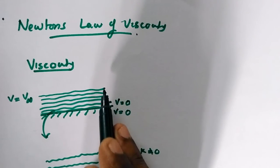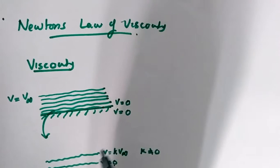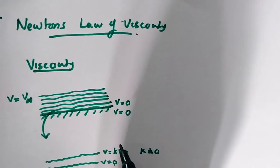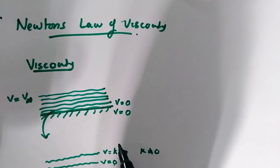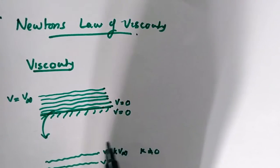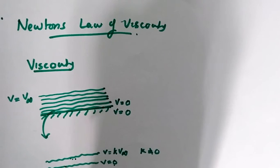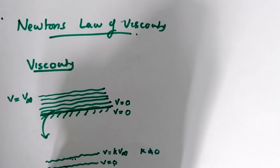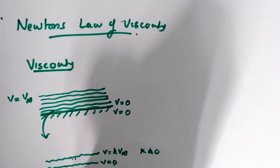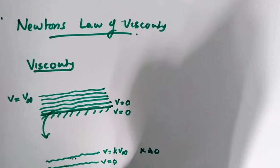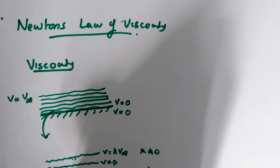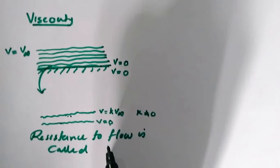So the fluid layer in contact with the flat plate has zero velocity, and the fluid velocity increases upward. The lower layer resists the flow of the upper layer. This resistance to flow is called viscosity.